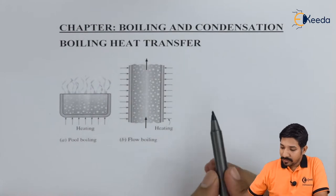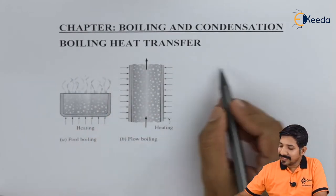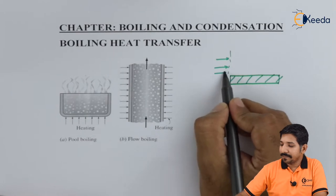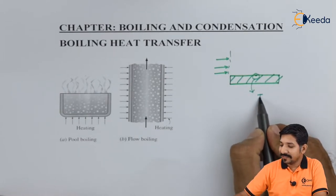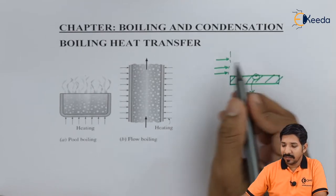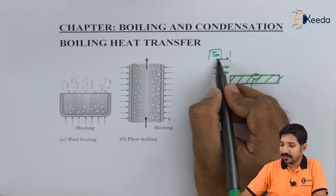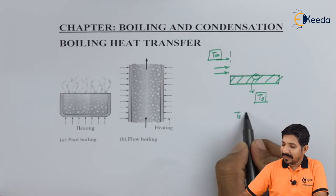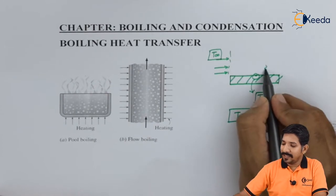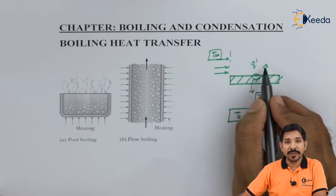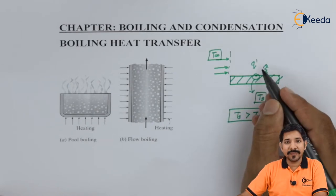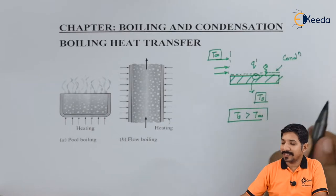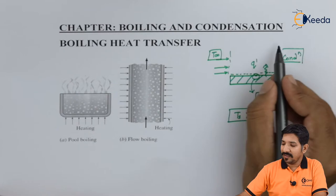To describe the boiling heat transfer, let us consider a plate whose temperature is T_s, and a fluid is flowing over the plate whose temperature is T_infinity. Now if T_s is greater than T_infinity, the heat will flow towards the fluid. So for the first layer we will have conduction and then after that we will have convection.